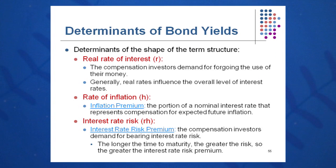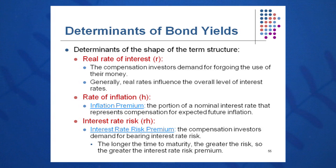There are three components: the real rate of interest (little r), which is the compensation we demand for the use of our money; an inflationary component, the portion of the total interest rate that represents compensation for expected future inflation; and finally, the little RH component — interest rate risk compensation. That's what makes up the term structure.